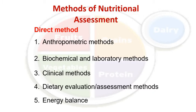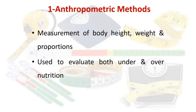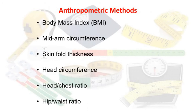We will discuss direct methods in detail but not indirect methods. First is the anthropometric method. It is the most commonly used method in clinics as well as in social science researches. In this method we measure the body height, weight and proportions. It is used to evaluate both under and over nutrition, and that is the reason it is the most important, most common and most cost-effective method.